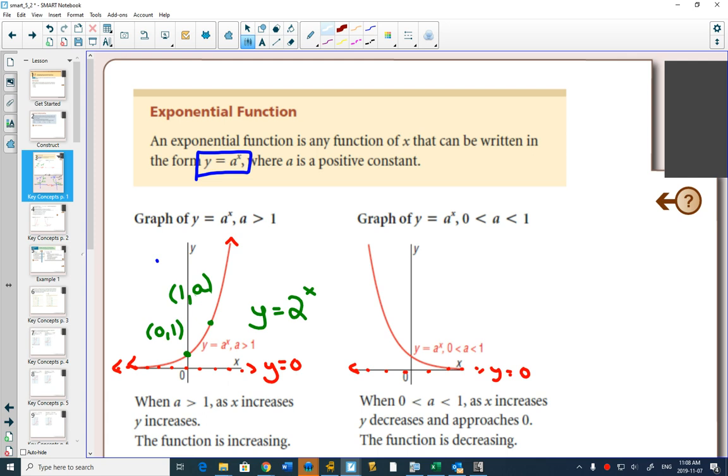On the second one, they're saying if you get an a value between 0 and 1, for example, 1 half to the x, well, now you still have, as always, the point 0 comma 1, just like on the green one.